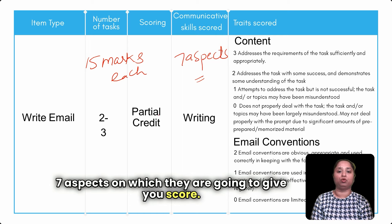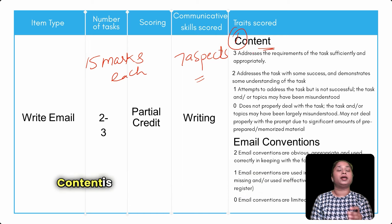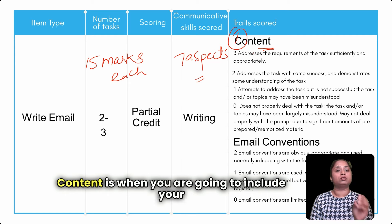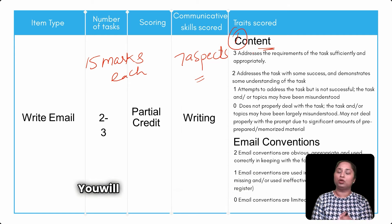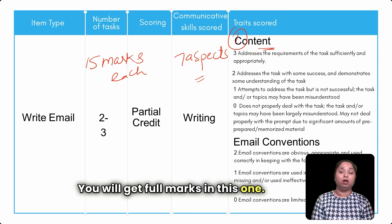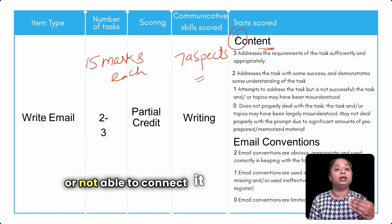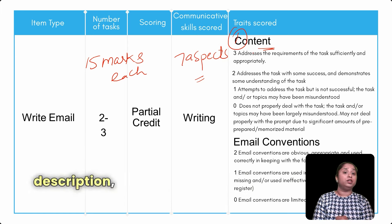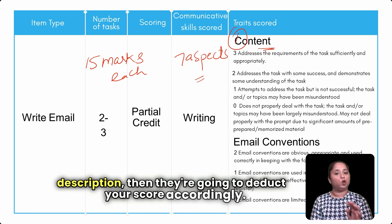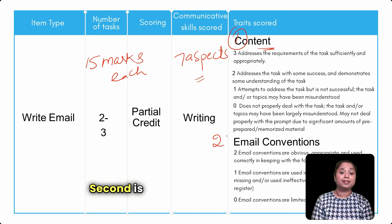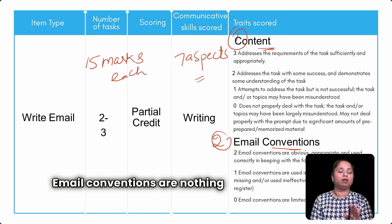The first aspect is content. Content means you include your situation from the description along with the themes — you will get full marks. But if you are missing a theme or not connecting it correctly with the description, they will deduct your score accordingly. The second aspect is email conventions — nothing but your salutation, like your opening and closing remarks.